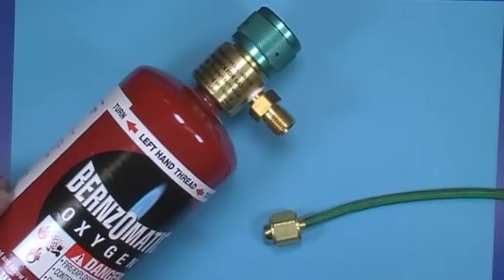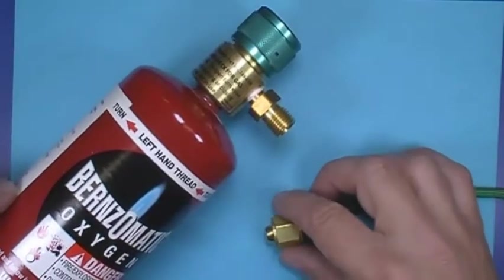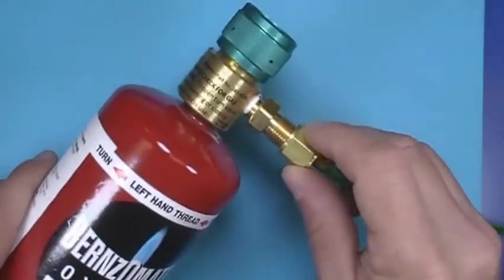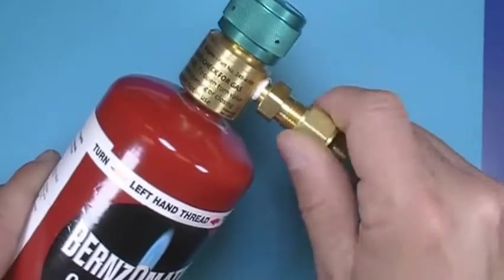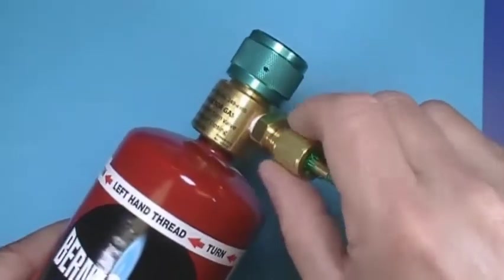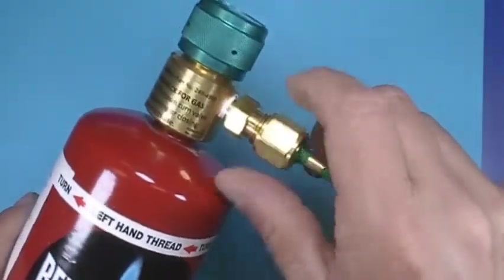The pressure fitting end of the green hose is secured to the regulator on the oxygen cylinder. Insert pressure fitting end of green hose into the oxygen regulator. Twist pressure fitting nut clockwise to tighten in place.